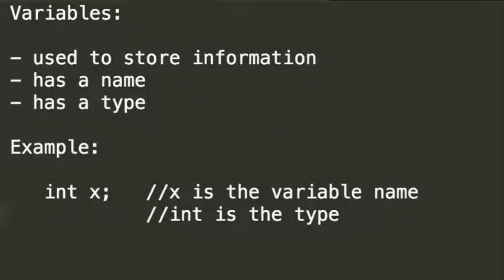Programming is about the storage and manipulation of data. And in order to store that data, what you will need are variables. A variable involves a name and a type.